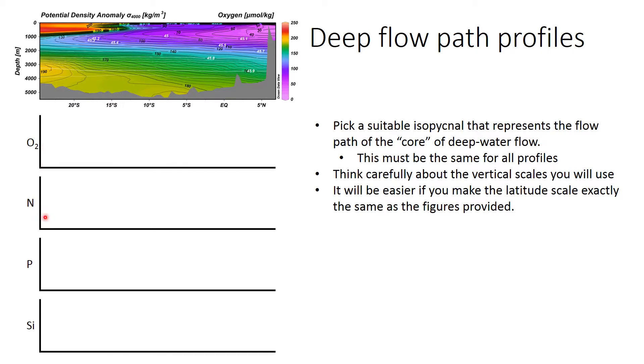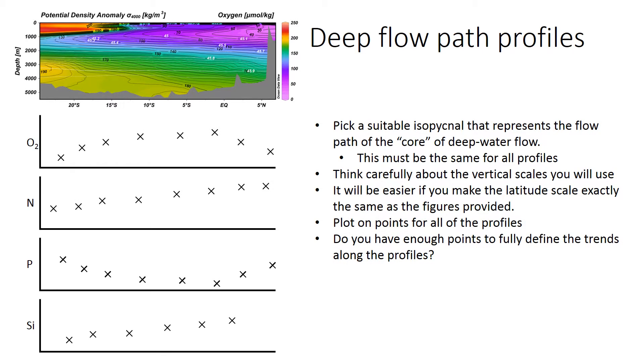Work out what the concentration is at any point along one of these white lines, then plot it on a section. Your horizontal scale has to be the same for all of the plots. If you make it the same as the handout you're given, it makes your life a lot easier. Think very carefully about what the vertical scale is going to be—what's the minimum and maximum concentration along the white line you've chosen.